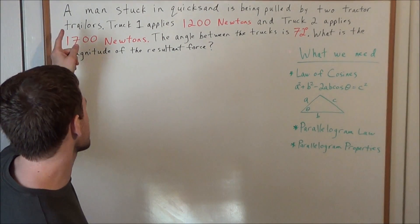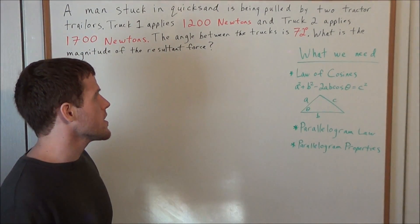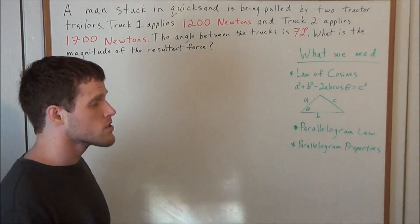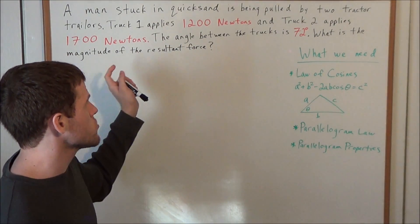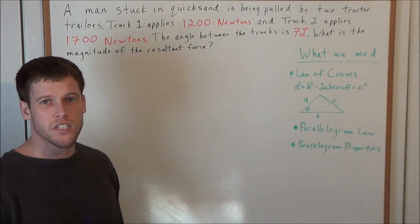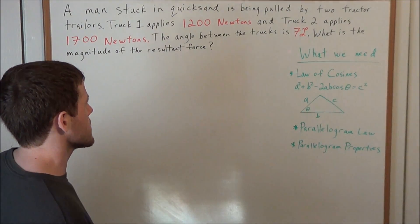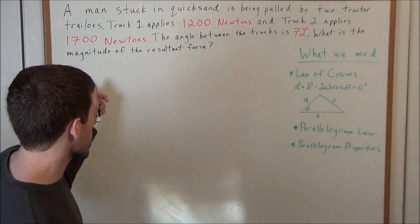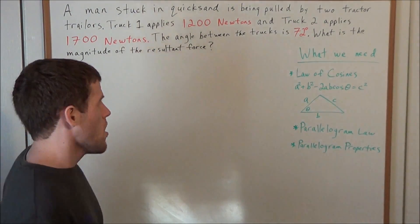In particular, I want to look at the example: a man stuck in quicksand is being pulled by two tractor trailers. Truck one applies 1200 newtons and truck two applies 1700 newtons. The angle between the trucks is 72 degrees. What is the magnitude of the resultant force?